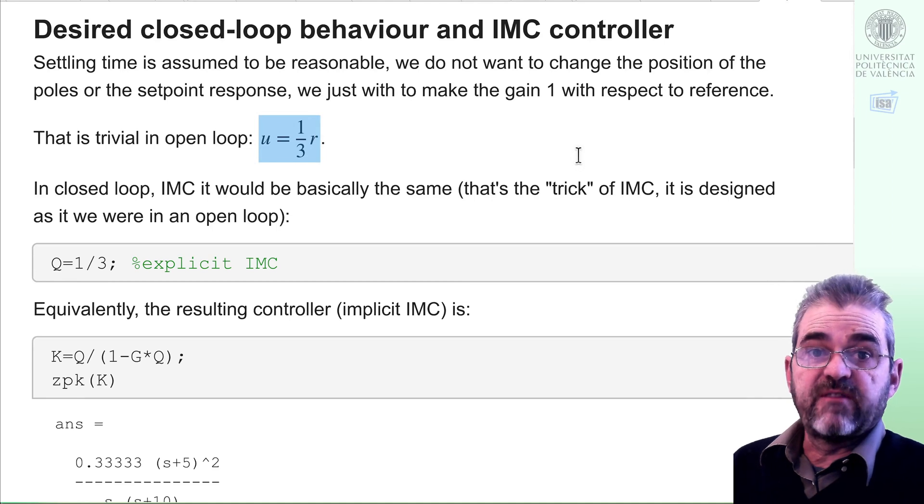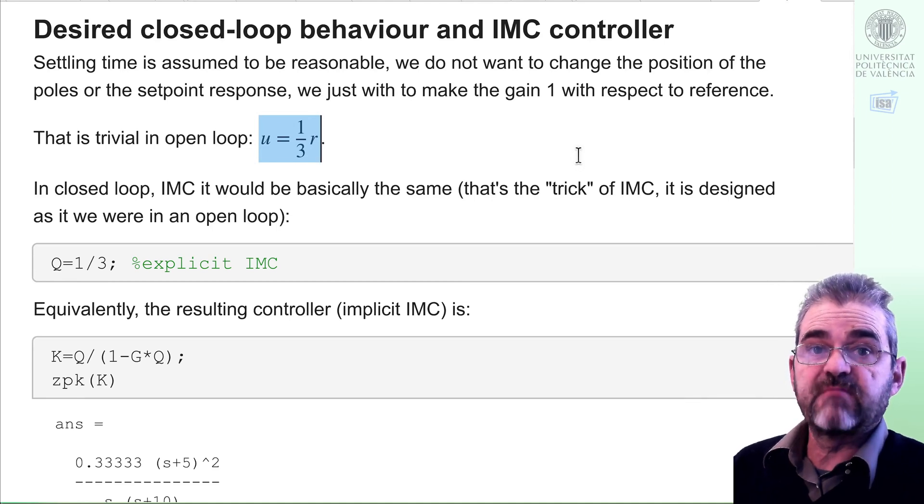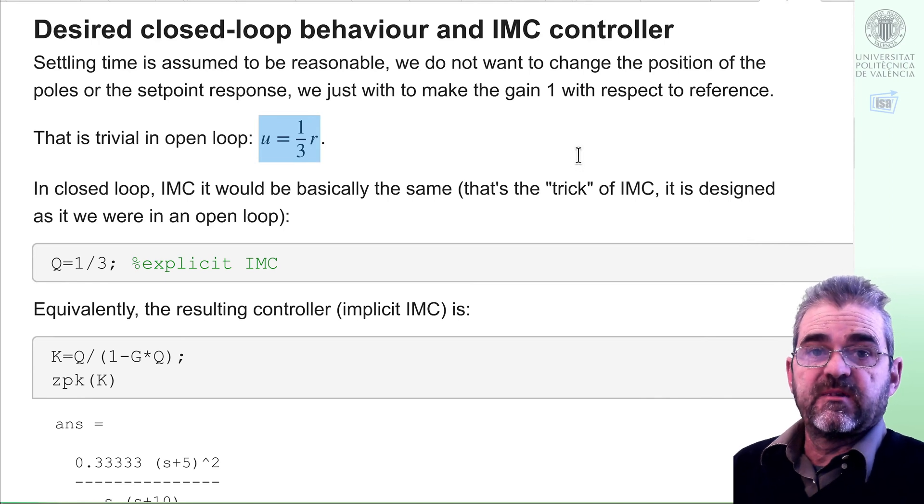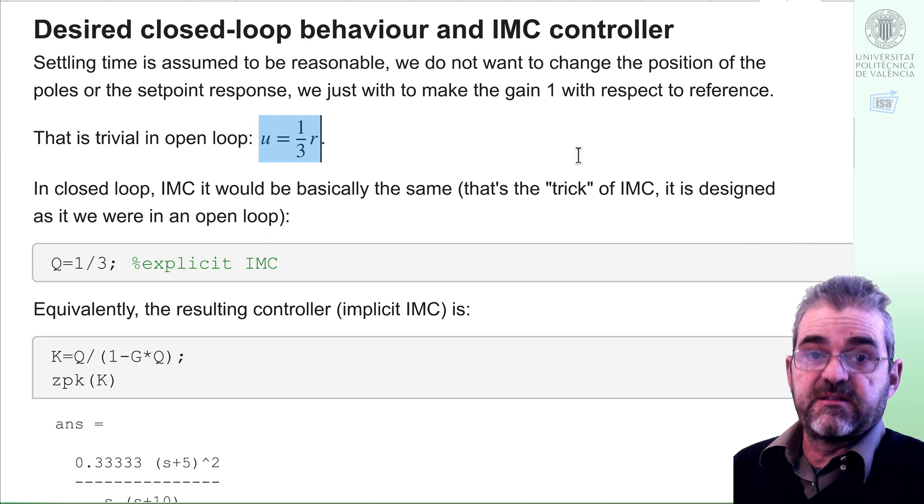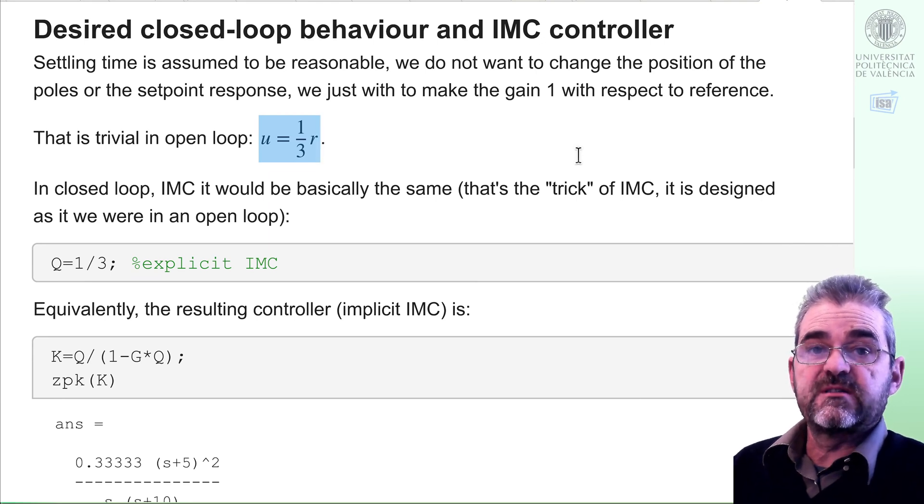Well, if I don't wish to change the dynamics and I were in open loop, this would be easy. Setpoint divided by DC gain would give me the step input needed to reach that setpoint. So in this case, as the DC gain is 3, one third times the setpoint would give me the open loop control action to reach that setpoint. But we wish to design a closed loop controller.